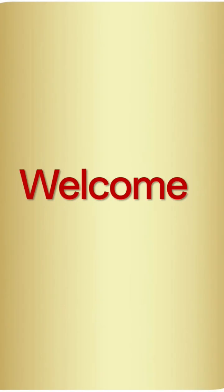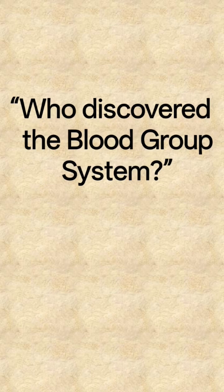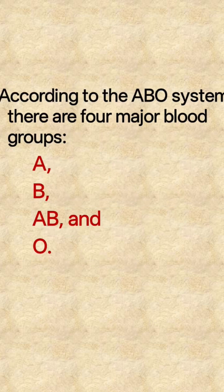Hello, my dear friends, welcome back to our channel. What is a blood group? An Austrian immunologist, Karl Landsteiner, discovered the ABO blood group system in 1901. According to the ABO system, there are four major blood groups: A,